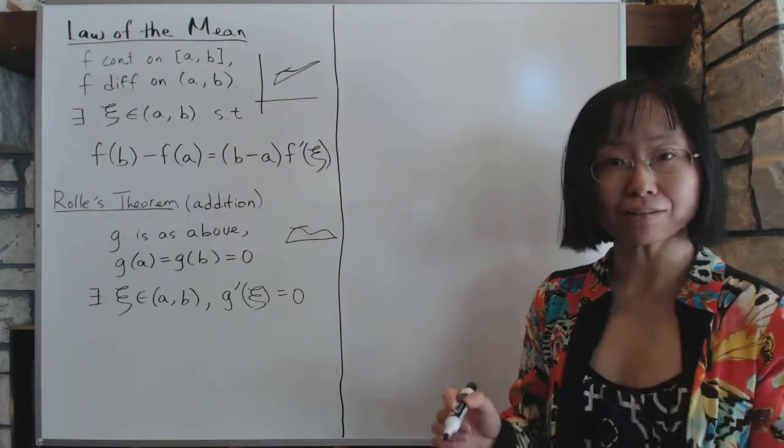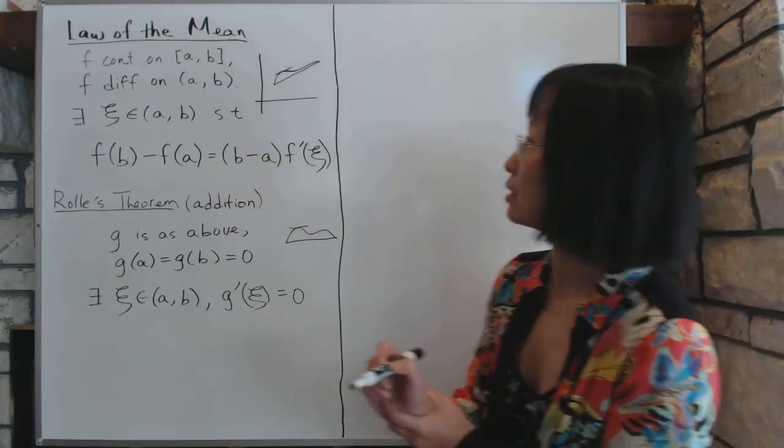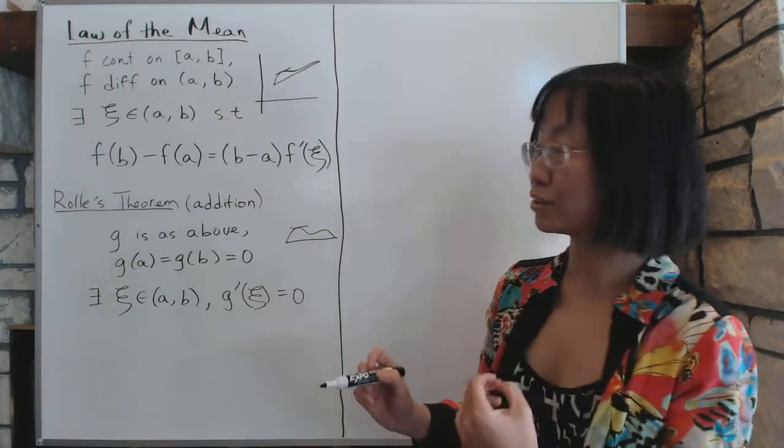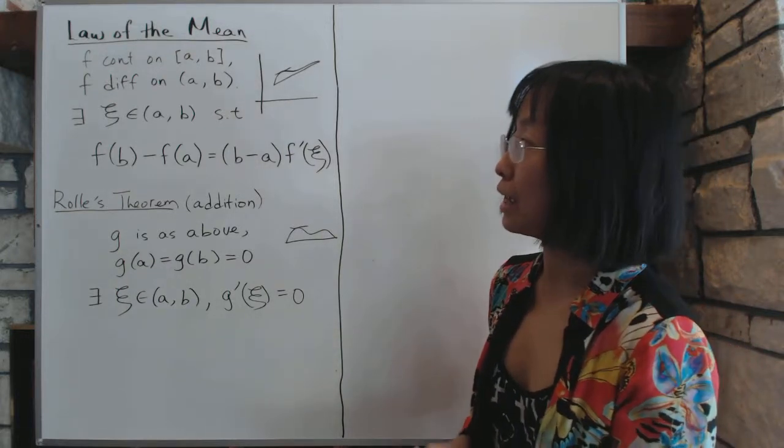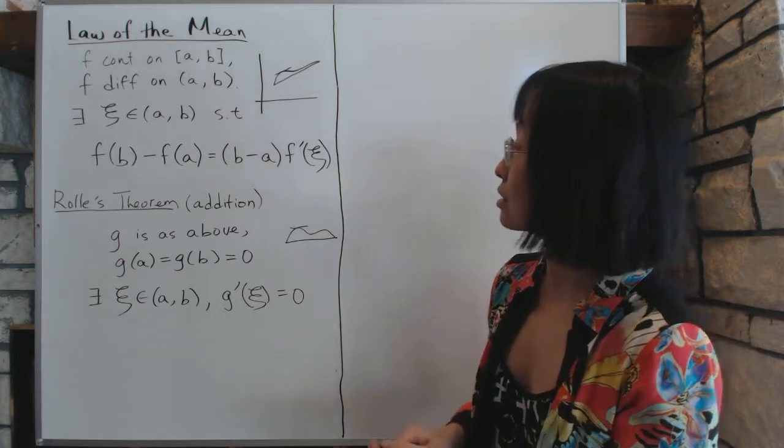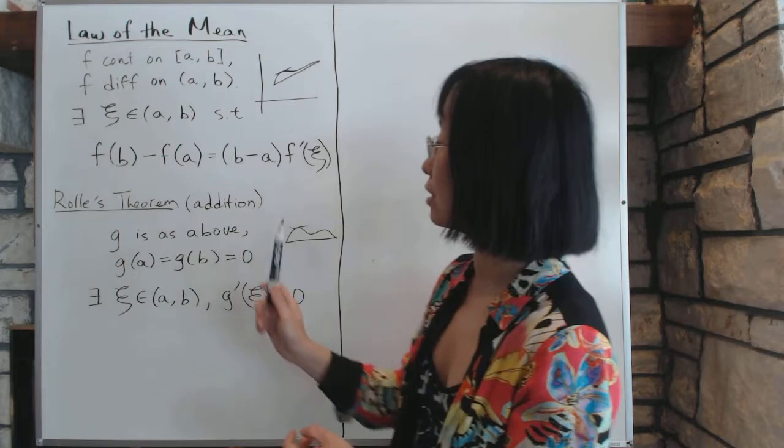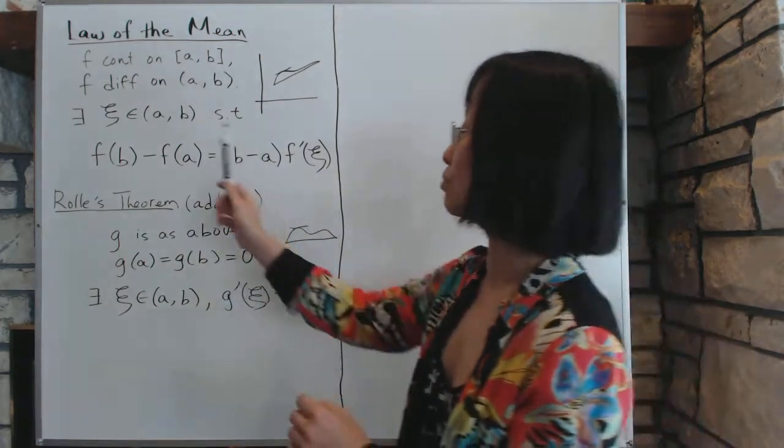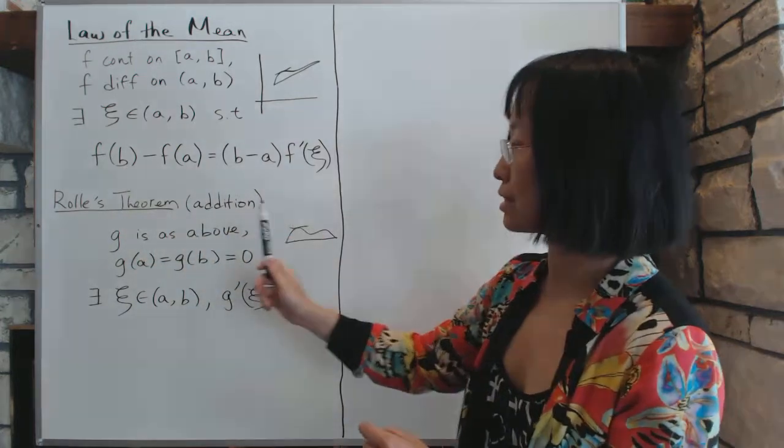It comes in handy in a lot of uses in proofs and as well as doing problems. The law of the mean states that if you have a function f that is continuous on [a,b] and f is differentiable on the open interval, then there exists a certain point, we'll call it ξ inside (a,b). So it isn't on the endpoint. That's very important. That is actually inside so that this particular relationship takes place.